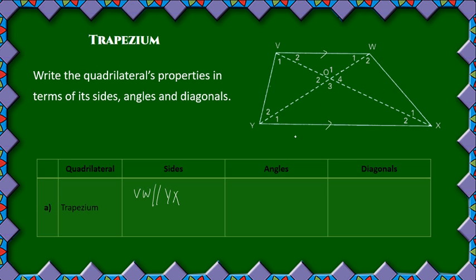Moving on to the angles, neither of these angles are equal or bisected in any way. And then for the diagonals, neither of the diagonals are equal or bisect each other. So the only thing that stands out from a trapezium is that one pair of opposite sides are parallel to each other.